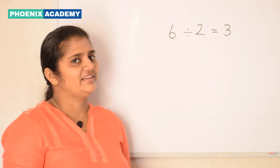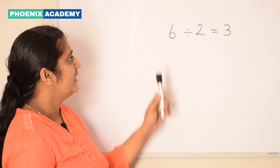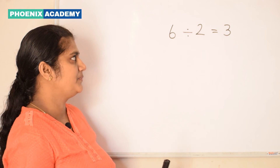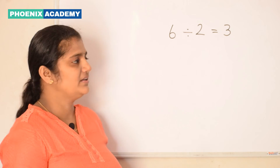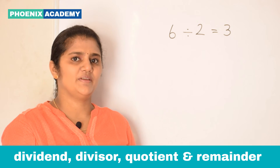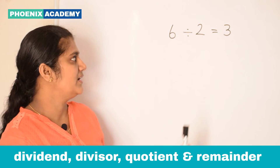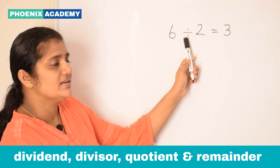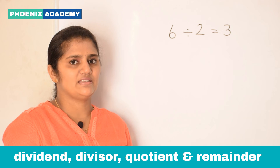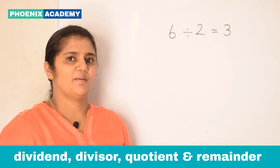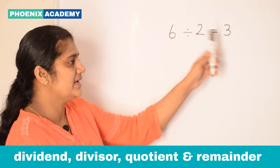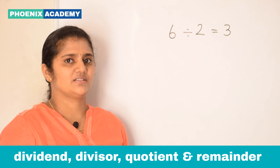Let's learn the terms of division. 6 divided by 2 equal to 3. In this division statement, 6 is called the dividend — the number to be divided. The division sign is used here. 2 is called the divisor — the number by which to be divided. And the answer, 3, is called the quotient.